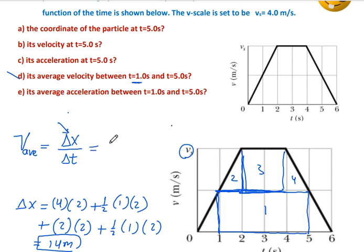Displacement is 14 meters. The time interval from 1 to 5 is 4 seconds. So, average velocity equals 3.5 meters per second.